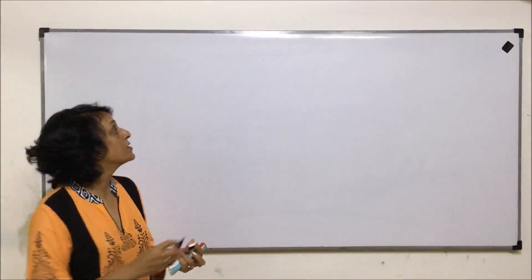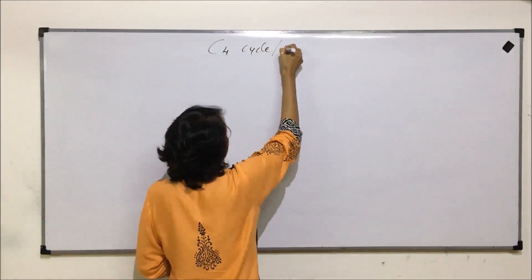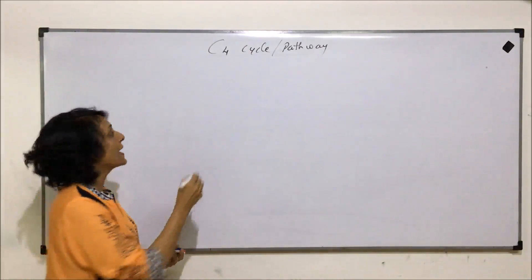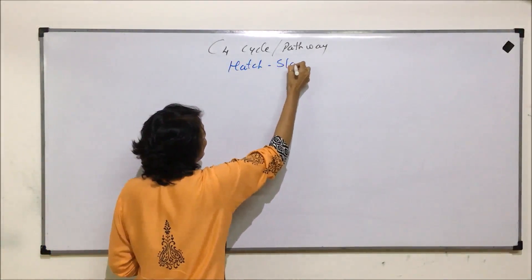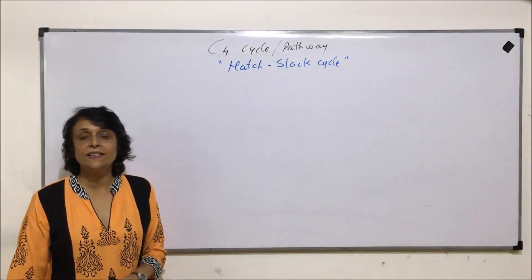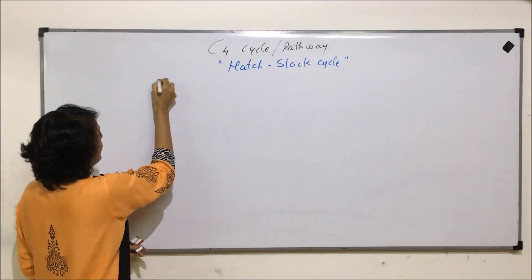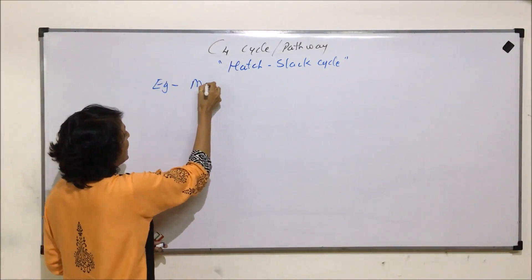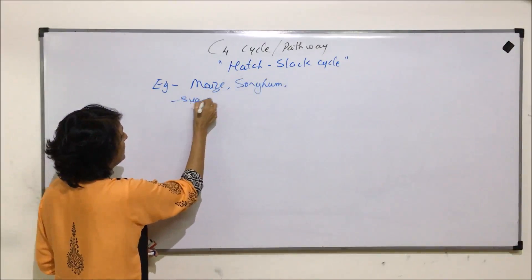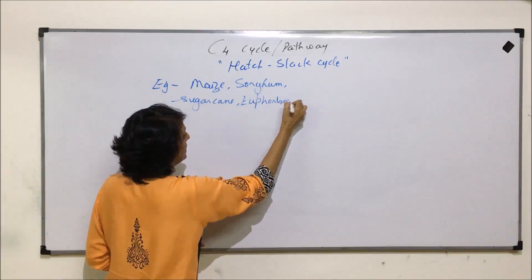In this video we will discuss the C4 cycle, also known as the C4 pathway or Hatch and Slack cycle, named after the scientists who described the complete cycle. This cycle is seen in C4 plants, examples of which include maize, sorghum, sugarcane, euphorbia, chinopodium, etc.